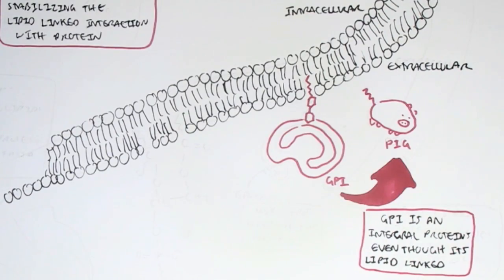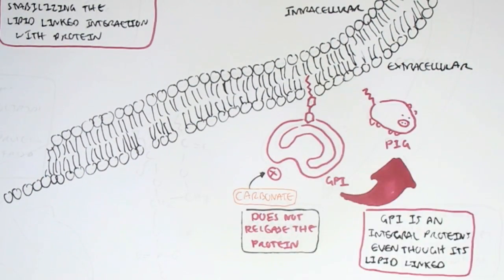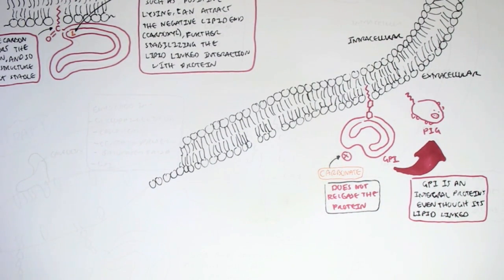However, carbonate, which are one of these chemicals, does not release GPI. And so that is why it is classified as integral protein, because usually carbonate will work in removing peripheral proteins.